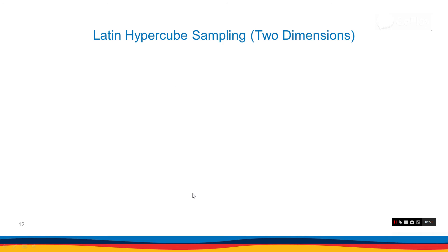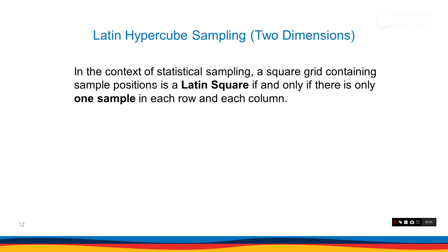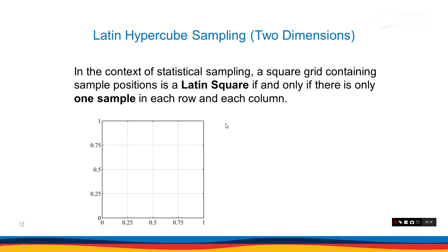That was one-dimensional sampling. What about two dimensions? Let me explain where that term comes from — Latin hypercube. In the context of statistical sampling, a square grid is called a Latin square if and only if there is only one sample in each row and each column. For example, considering a discrete grid, this is a Latin square because there is only one sample in each row and each column.